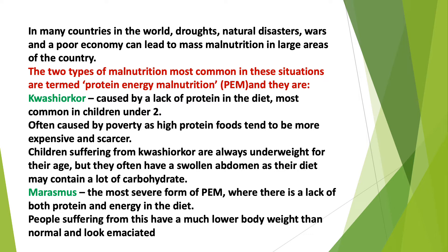Marasmus is the most severe form of PEM where there is a lack of both protein and energy in the diet. People suffering from this have a much lower body weight than normal and look emaciated.